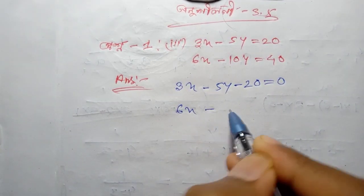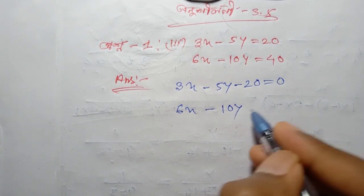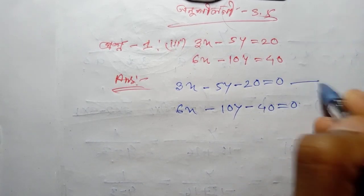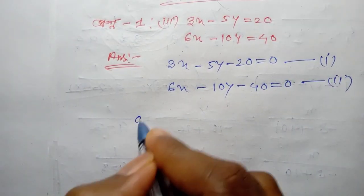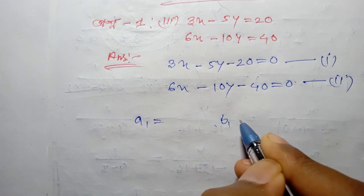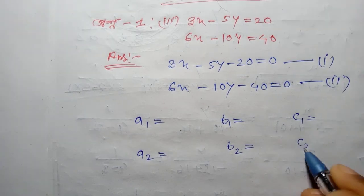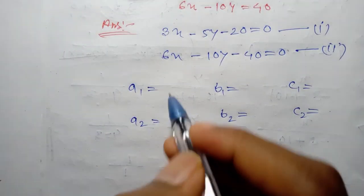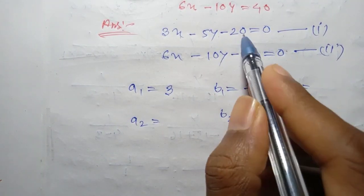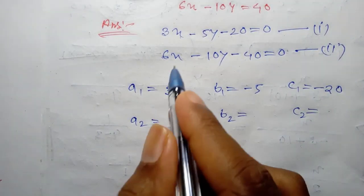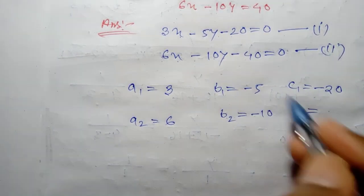We rewrite: 3x minus 10y plus 40 equal to 0. Now identifying coefficients: a1 is 3, b1 is minus 5, c1 is minus 20; a2 is 6, b2 is minus 10, and c2 is minus 40.